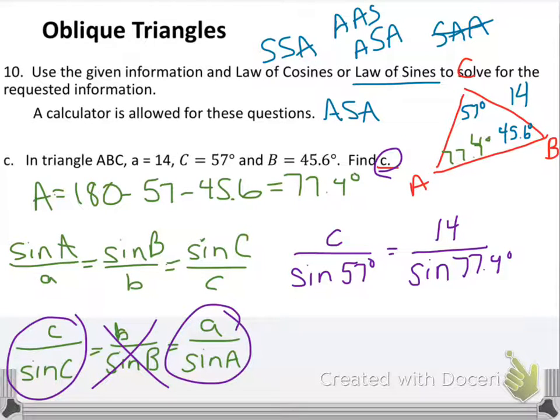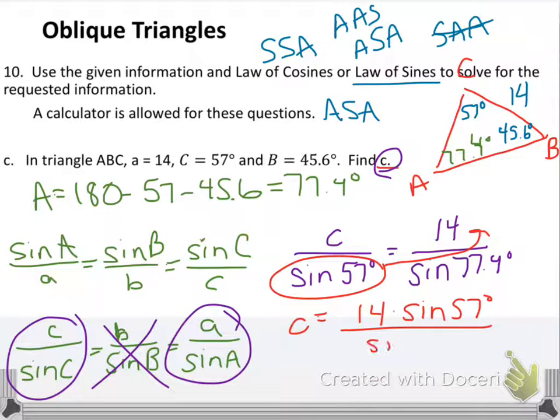To solve for C, all I have to do is multiply each side by what's in the denominator over here. So what we're going to put in the calculator, it's going to be 14 times the sine of 57 degrees over the sine of 77.4 degrees. When you put that into the calculator, you should get that side C is equal to 12.031. And that's all you have to do for the law of sines.